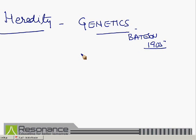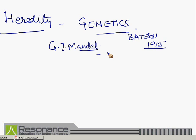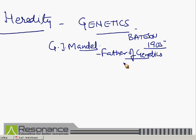One more scientist whose contribution is immense in this science is Gregor John Mendel, who is also known as the father of genetics. Because of his vast experiments, he developed the rules of inheritance — how characters are transmitted from one generation to the next.